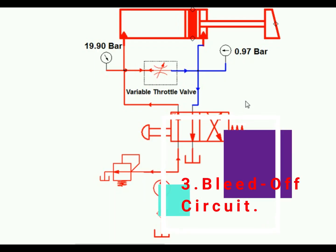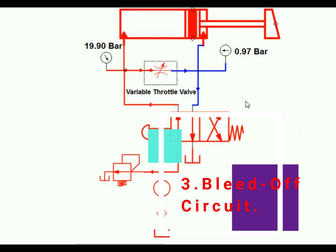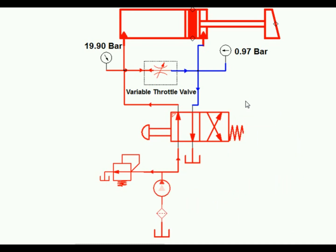Next circuit to control speed is bleed off circuit. In bleed off circuit, flow control valve is not installed directly in a feed line. It is fixed into the line with its outlet connected to a return line.